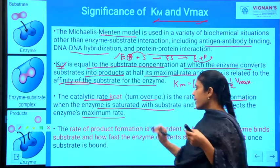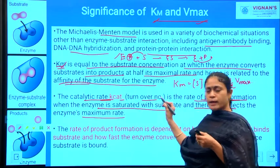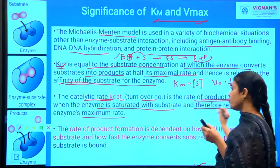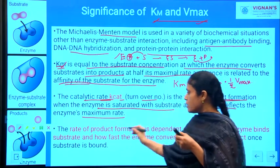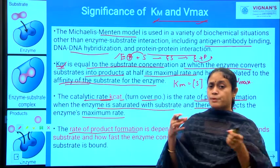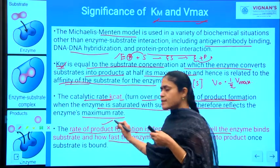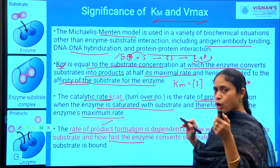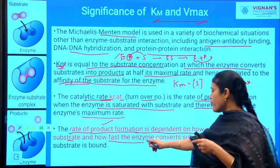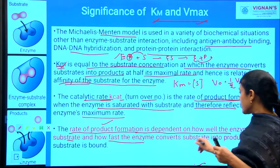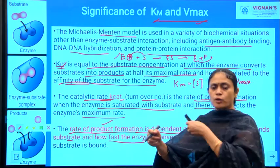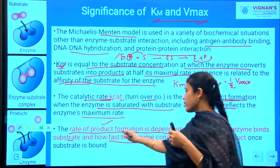The catalytic rate Kcat — the turnover number — is defined as the rate of product formation when the enzyme is saturated with substrate, reflecting the enzyme's maximum rate. The rate of product formation depends on how well the enzyme binds the substrate and how fast the enzyme converts the substrate into product.